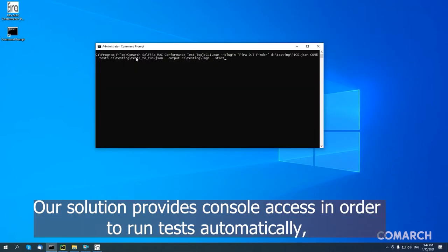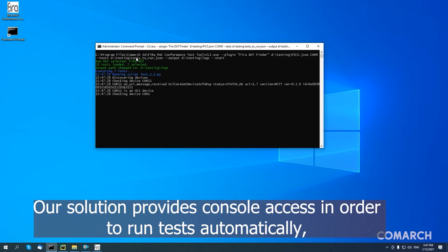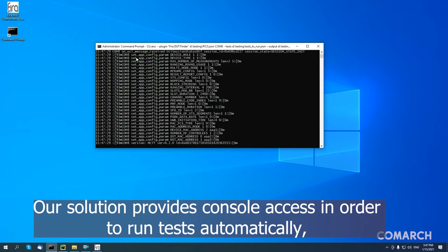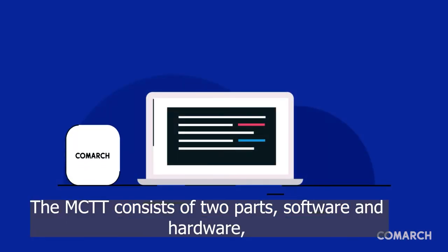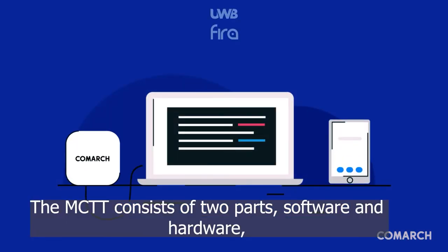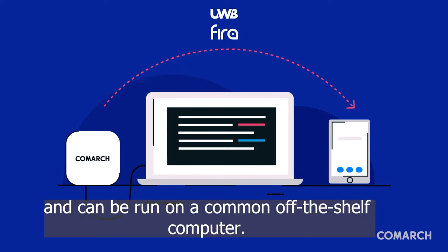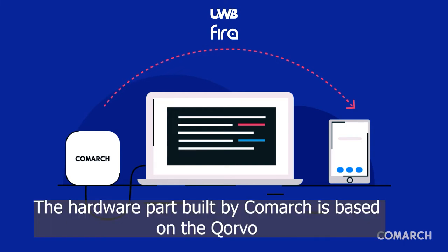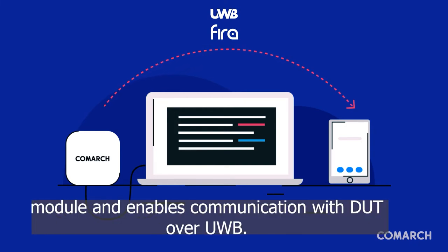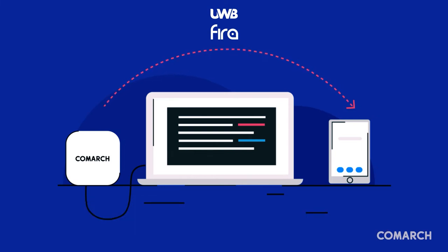Our solution provides console access in order to run tests automatically, for example in nightly builds. The MCTT consists of two parts, software and hardware, and can be run on a common off-the-shelf computer. The hardware part built by Comark is based on the Corvo module and enables communication with DUT over UWB.